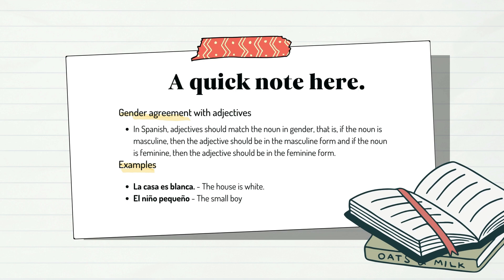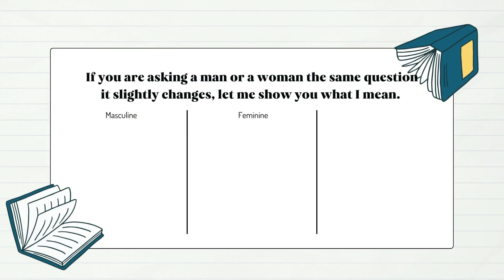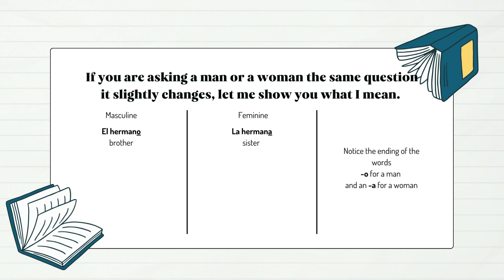A quick note here. In Spanish, adjectives should match the noun in gender — that is, if the noun is masculine, the adjective should be in masculine form, and if the noun is feminine, the adjective should be in feminine form. For example: el hermano / la hermana; el nieto / la nieta; el tío. Notice the ending of the words — O for a man and A for a woman.